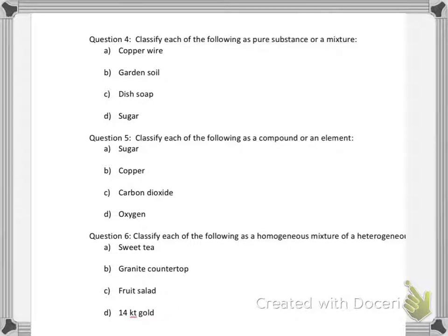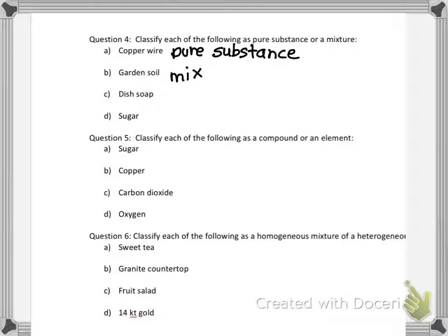Question four: classify each of the following as a pure substance or a mixture. Pure substances contain only one thing (an element or compound); mixtures have two or more different things. Copper wire would be a pure substance — it's just copper. Garden soil, which has lots of different things in it, would be a mixture.